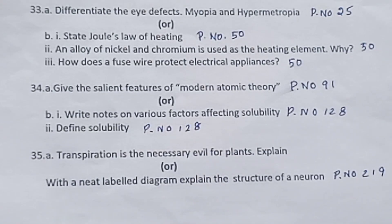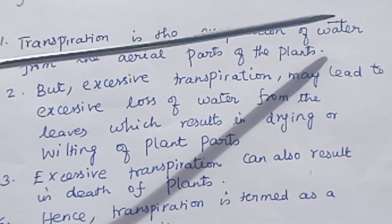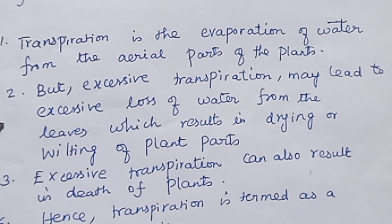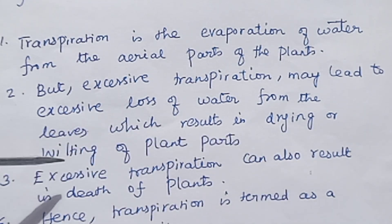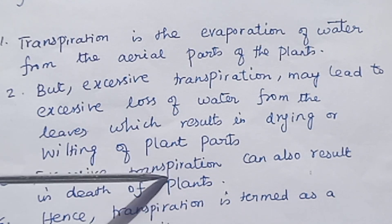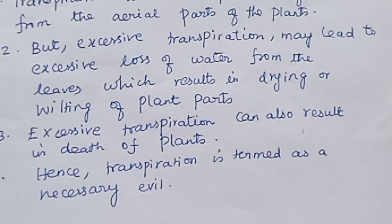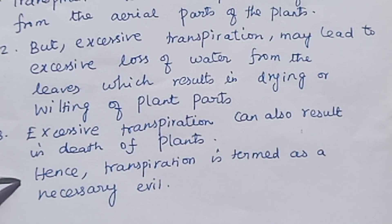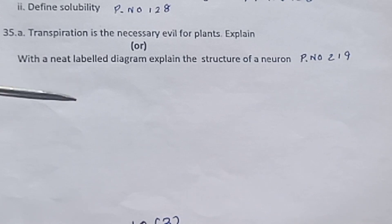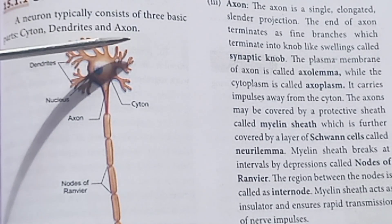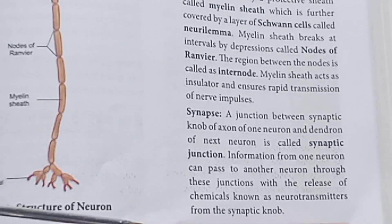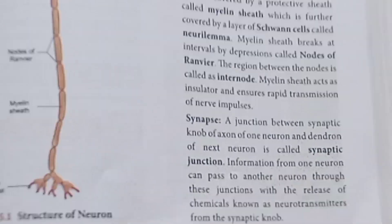Question 35a: Transpiration is a necessary evil for plants. Explain. First point: Transpiration is evaporation of water from the aerial parts of a plant. But excessive transpiration may lead to excessive loss of water from the leaves which results in drying or wilting of plant parts. Excessive transpiration can also result in death of plant. Hence transpiration is termed as a necessary evil. Question 35b: Explain structure of neuron. Page 219. Very important question. Structure of neuron: Neuron typically consists of (start from same page). After synaptic knob is the answer end.